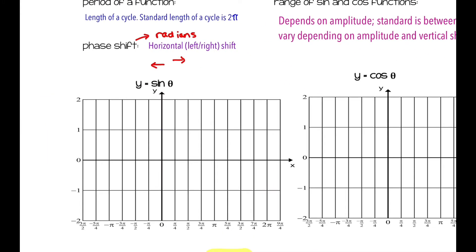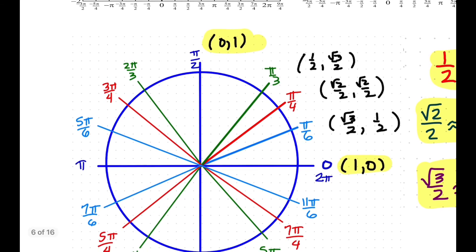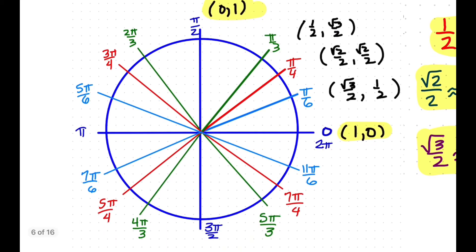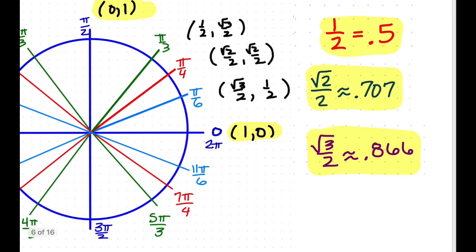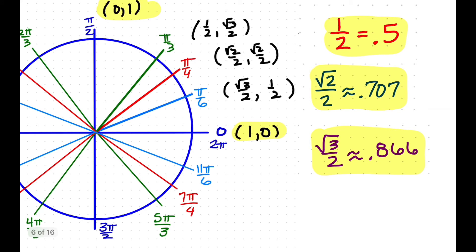Before we actually get into graphing our sine and cosine functions, let's remember what the unit circle looks like. If you have your unit circle with you, that would be helpful for this lesson, as we'll refer back to it often. I've written the cosine and sine values for the first quadrant, along with decimal approximations for those numbers, because they're good to know as we go through our graphs.